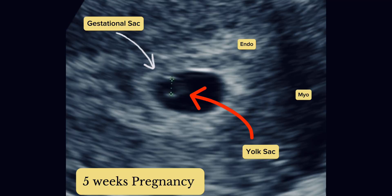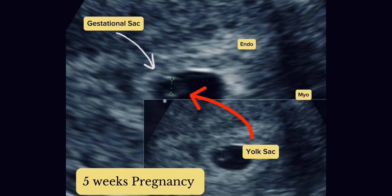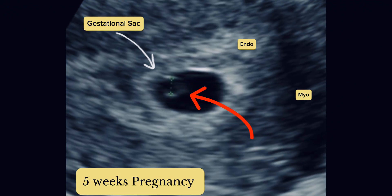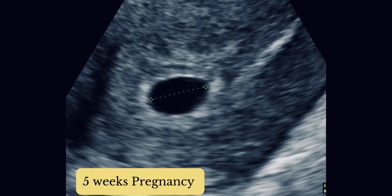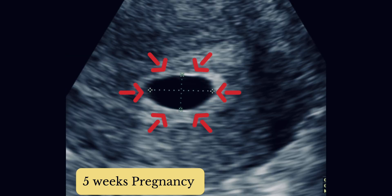The yolk sac is the earliest anatomical structure detected within the gestational sac. It is essential for embryonic development, supplying nutrients, acting as the site of initial blood formation, and fulfilling endocrine, metabolic, and immunological roles.